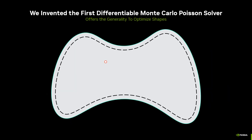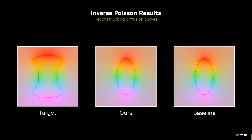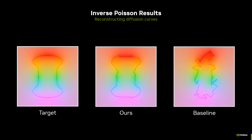Based on this, we derived a new formulation and developed the first differentiable Monte Carlo Poisson solver that offers the generality to optimize shapes. Our method could successfully optimize the shape of a diffusion curve that matches the target, while the baseline method fails.